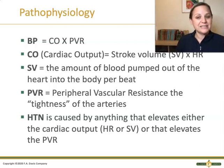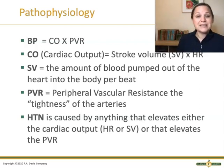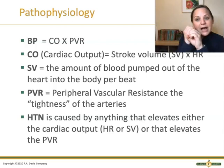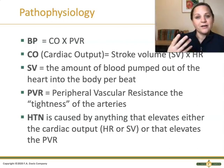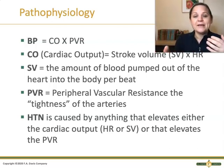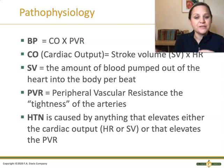Peripheral vascular resistance is the other component of blood pressure — when the heart pushes blood out of the left ventricle into circulation, how much resistance is it facing? How much tension is there in the arterial system? Peripheral vascular resistance is determined by how tight or how wide those arteries are. So high blood pressure is caused by anything that elevates cardiac output — heart rate or stroke volume — or something that elevates peripheral vascular resistance.